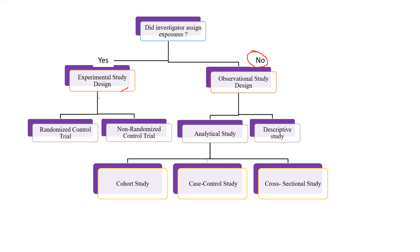In experimental study design, if there is random allocation, then it would be the randomized controlled trial. And if there is no random allocation, then it would be a non-randomized controlled trial.